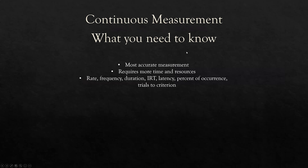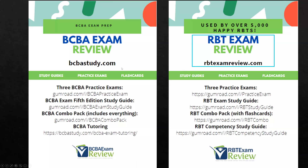What do you need to know? Continuous measurement is the most accurate type of measurement because we're measuring every instance of a behavior. It requires more time and resources, which is why discontinuous measurement is often used in large groups or classrooms with multiple clients. Know the types: rate, frequency, duration, inter-response time, latency, percent of occurrence, and trials to criterion. Also know how to find totals and averages — know the math. Thanks for watching. Check out bcbastudy.com for BCBA study materials and rbtexamreview.com for RBT materials. Questions and comments, please let me know. Work hard, study hard.